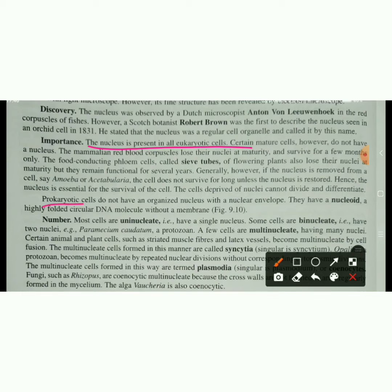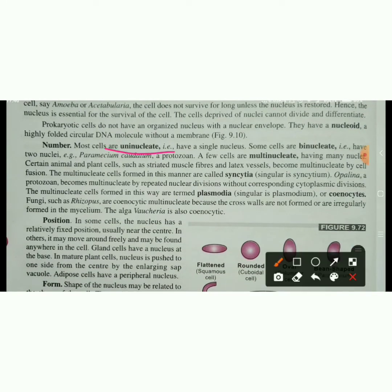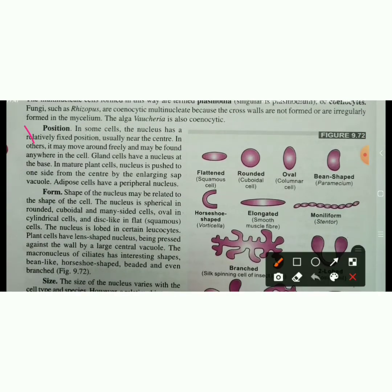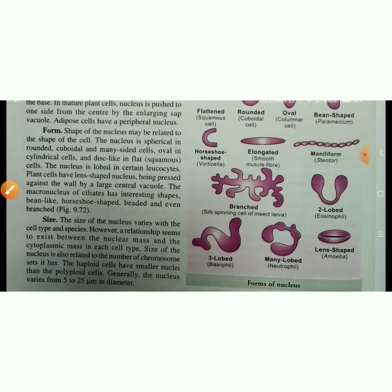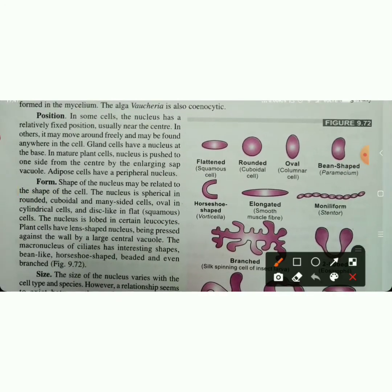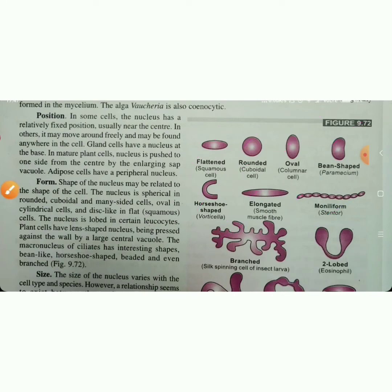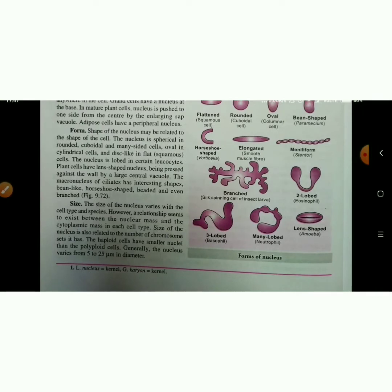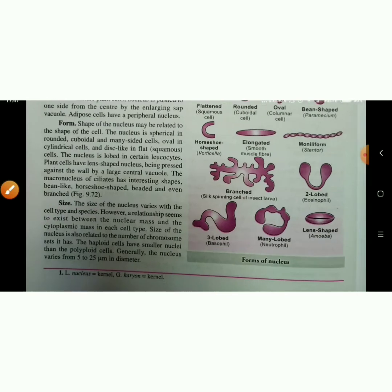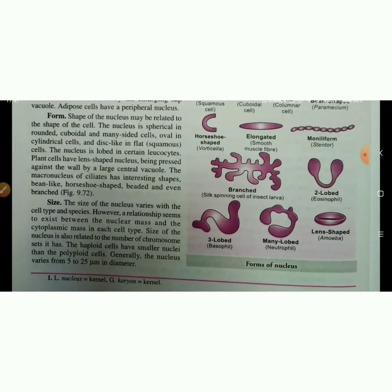In eukaryotic cells, the nucleus is typically fixed near the center, but in some cells it may be positioned on the side. There are also different shapes of nucleus. For exams or entrance tests, you need to learn the different diagrams. Regarding size, the size of the nucleus varies from cell to cell and species to species.